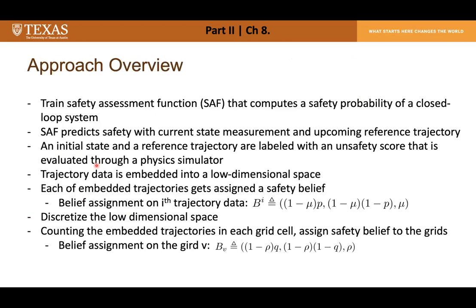The approach trains a Safety Assessment Function (SAF) that computes a safety probability for a closed-loop system. SAF takes state measurement and the upcoming reference trajectory as input. During training, an initial state and reference trajectory are labeled with an unsafety score evaluated through the physics simulator. The trajectory data is embedded into a low-dimensional space, and each embedded trajectory is assigned a safety belief: the first component represents probability of being safe, the second probability of being unsafe, and the third represents subjective uncertainty.